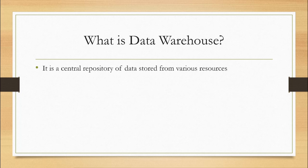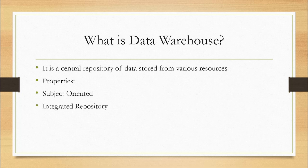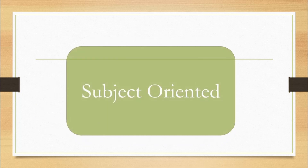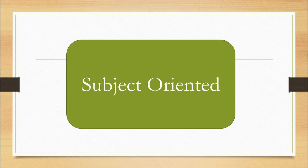We already know what a data warehouse is, and we also know its properties. The first property is that it has to be subject-oriented, the second property is it has to be an integrated repository, the third one is it has to be non-volatile, and the fourth one is it has to be time-variant. Now, what does it mean by subject-oriented?